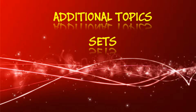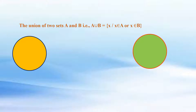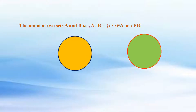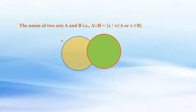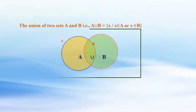Additional Topics: Sets. The union of two sets A and B, i.e., A union B, is equal to the set of X where X belongs to A or X belongs to B.